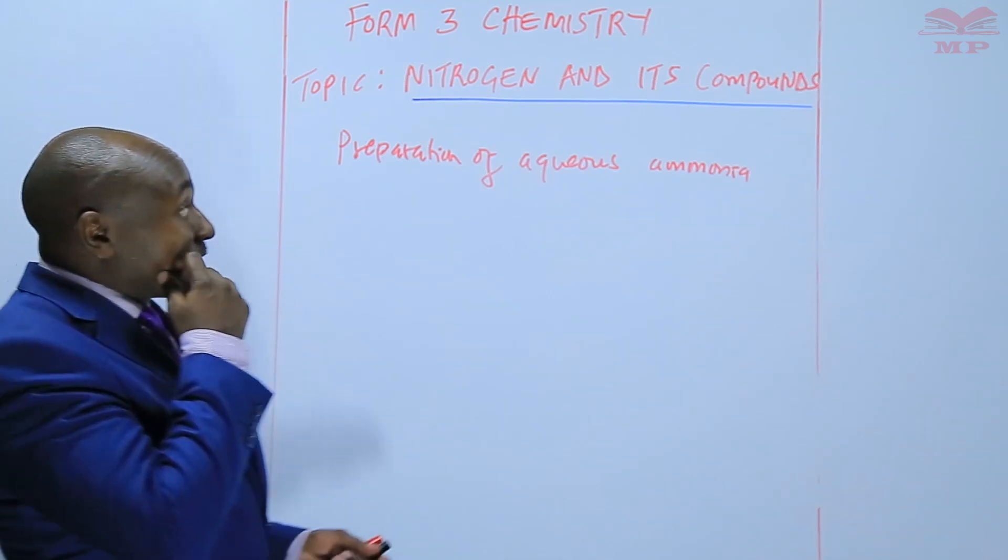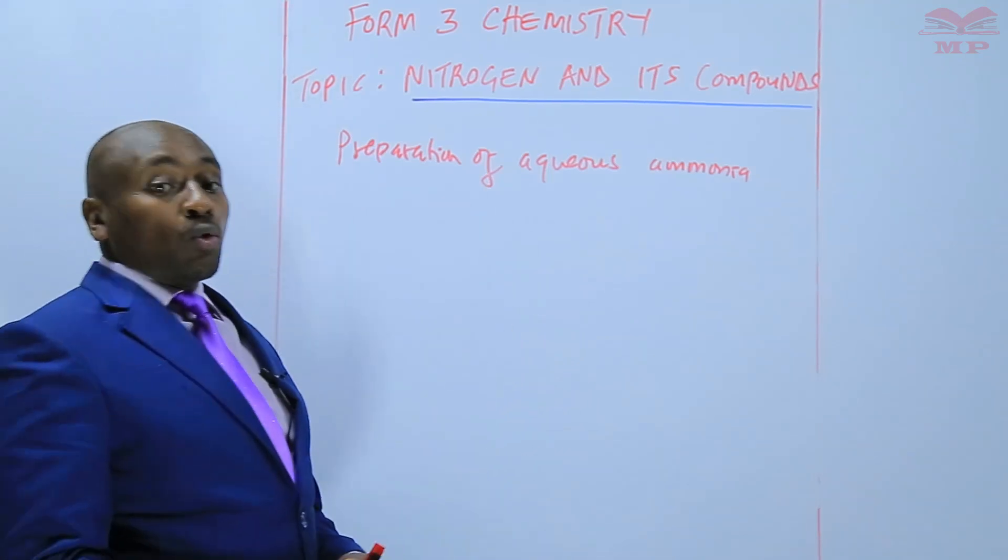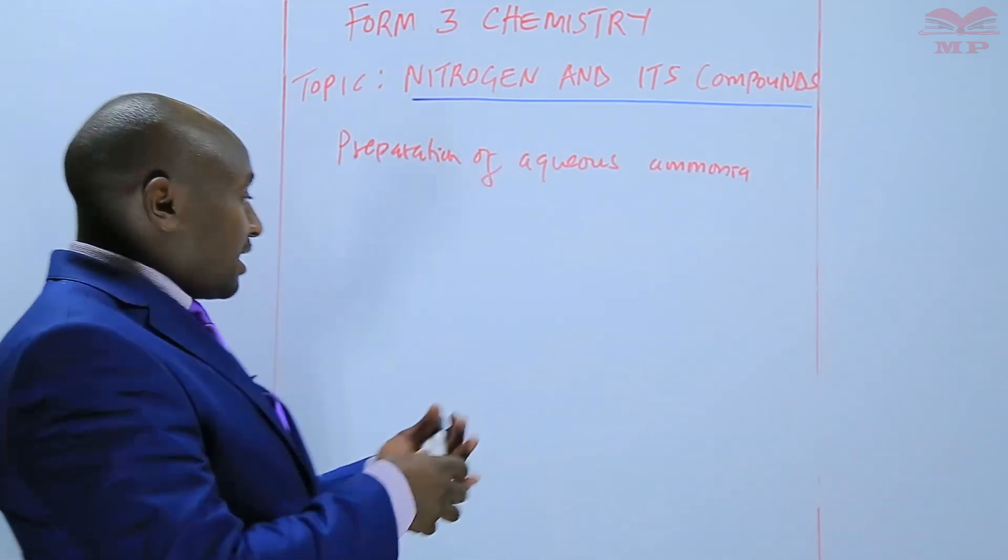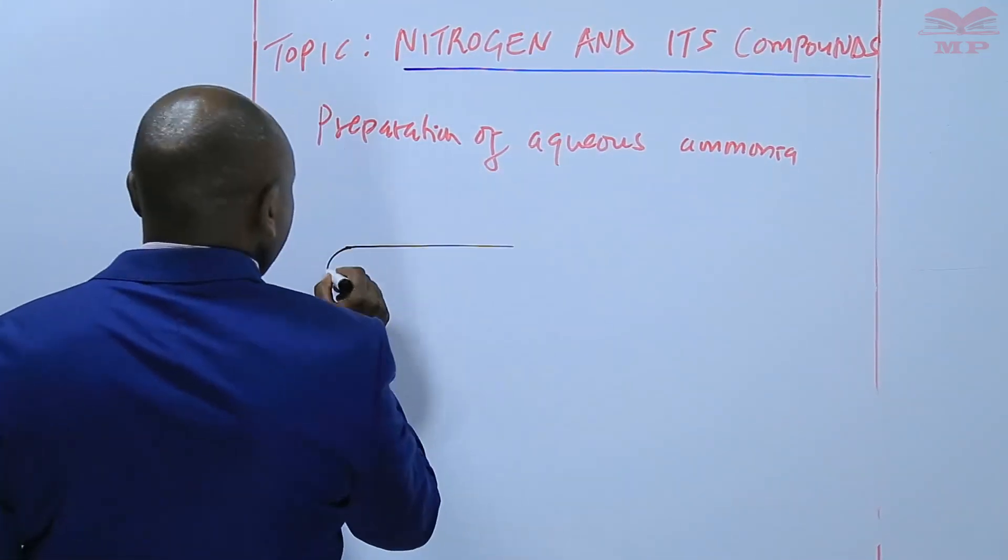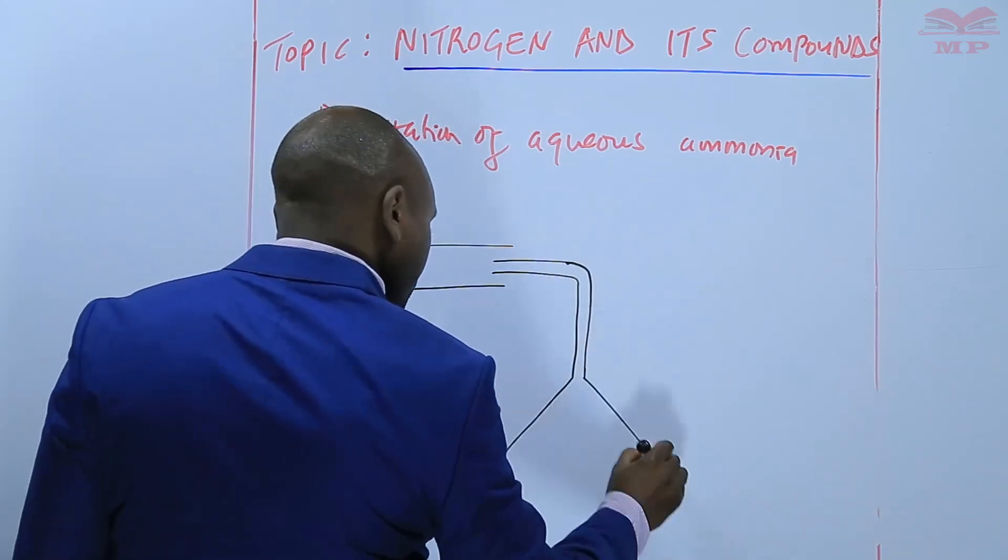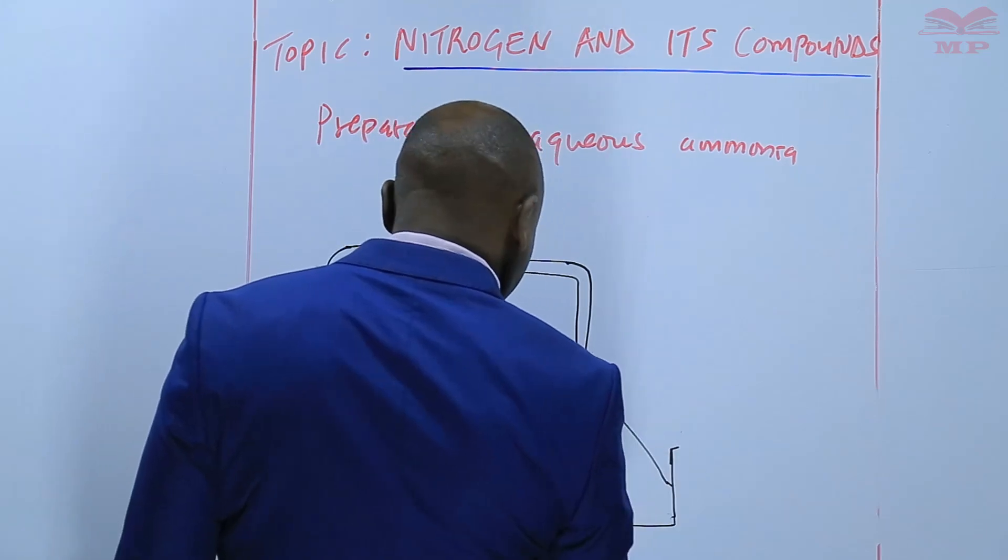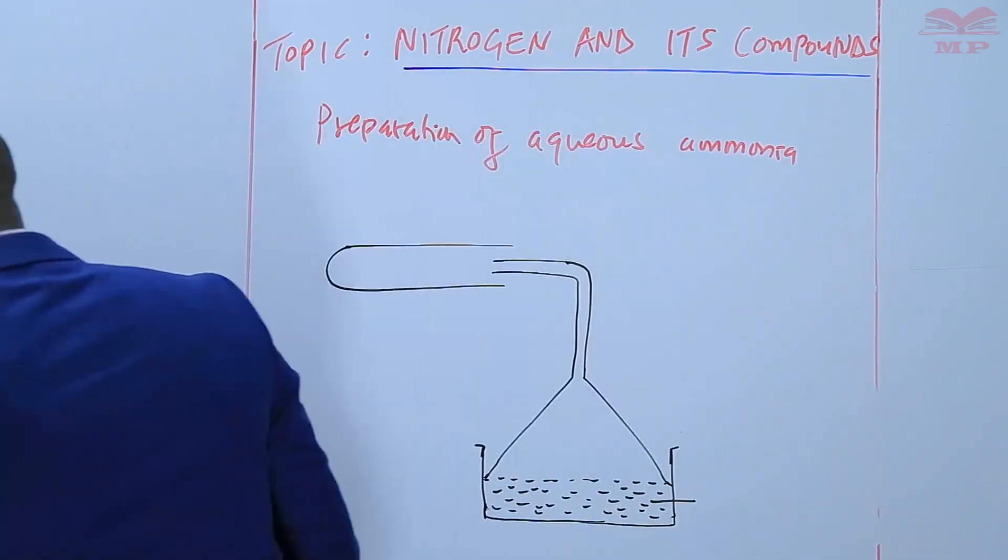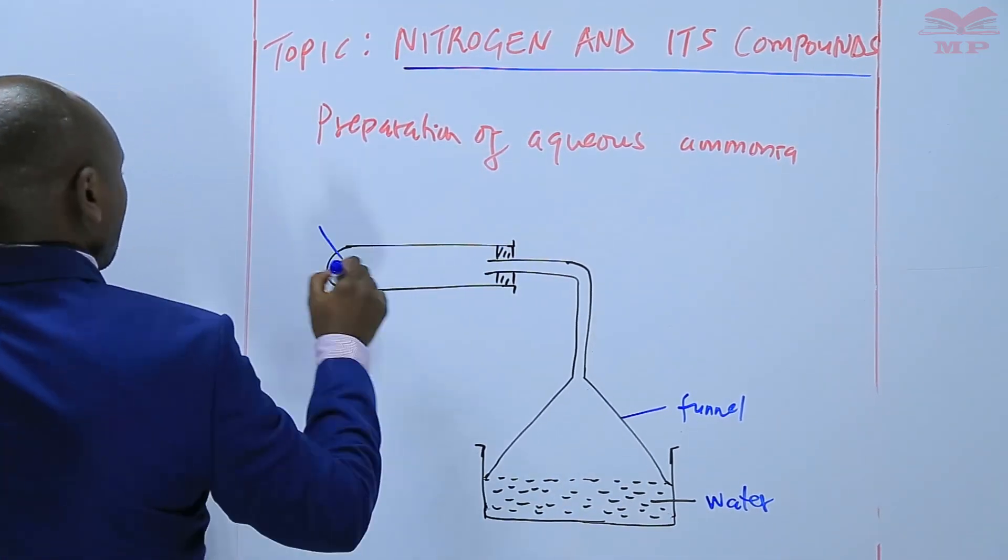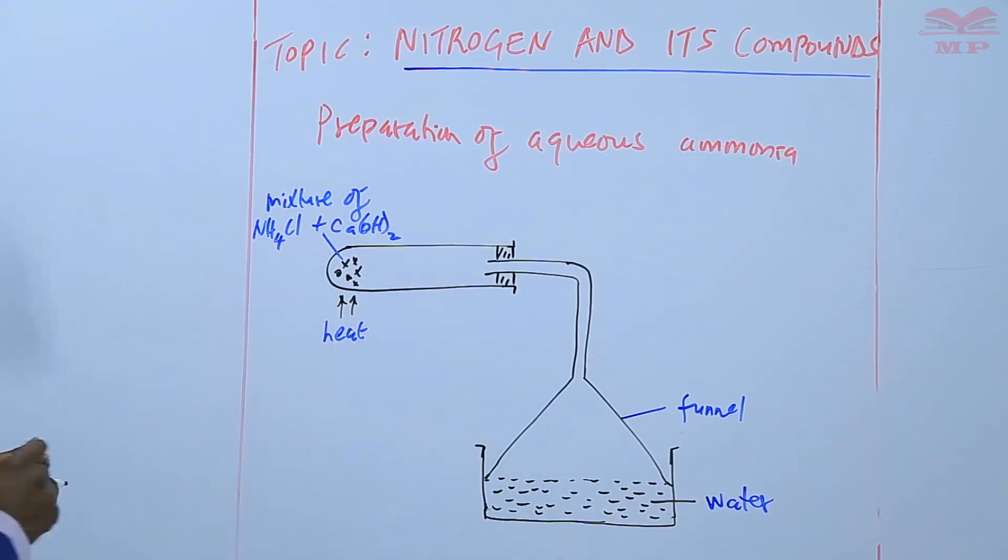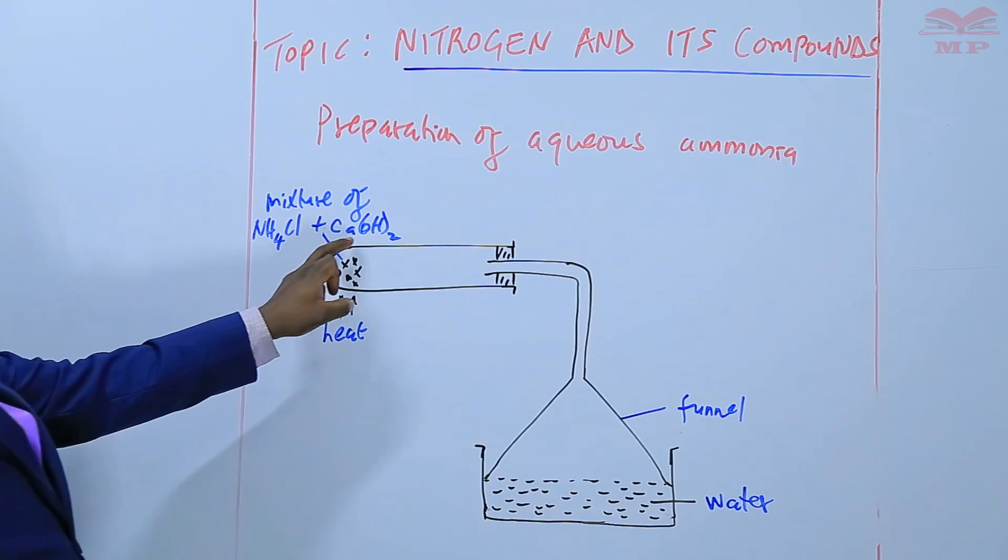And during the preparation of aqueous ammonia, we dissolve the ammonia gas in water through a funnel, as shown in the diagram. So we prepare ammonia gas by heating a mixture of ammonium chloride and calcium hydroxide.